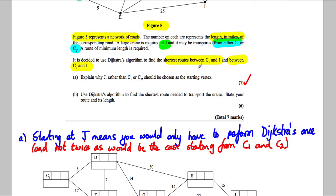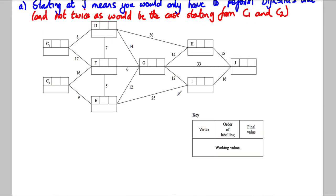Then it says use Dijkstra's algorithm to find the shortest route. We're going to start from J. J is the first one we label with no distance from J to itself. From this one we've just labeled, we can go 15 here, we could get here in 16, or we could get here in 33.